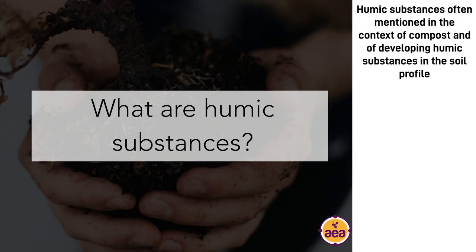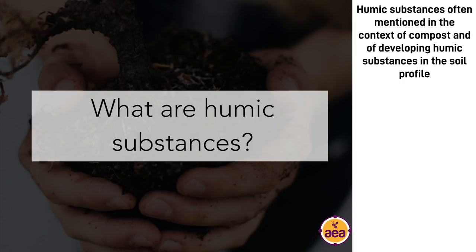I wanted to speak about what humic substances are, what the differences are between humic acids versus fulvic acids and some of these various compounds, and how to think about them. The foundational piece: the term humic substances is generally used to refer to this overarching category. People describe humic substances sometimes in the context of compost and the need for compost to produce stable humic substances or the need to produce stable humic substances in the soil profile.